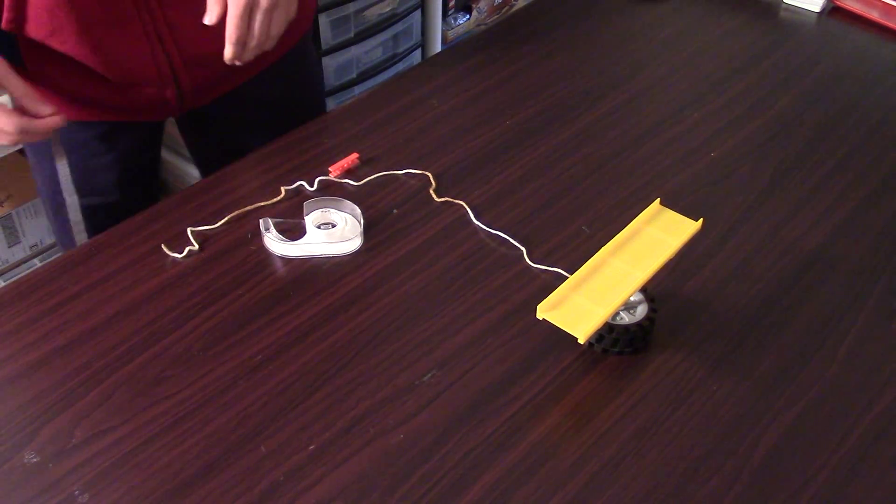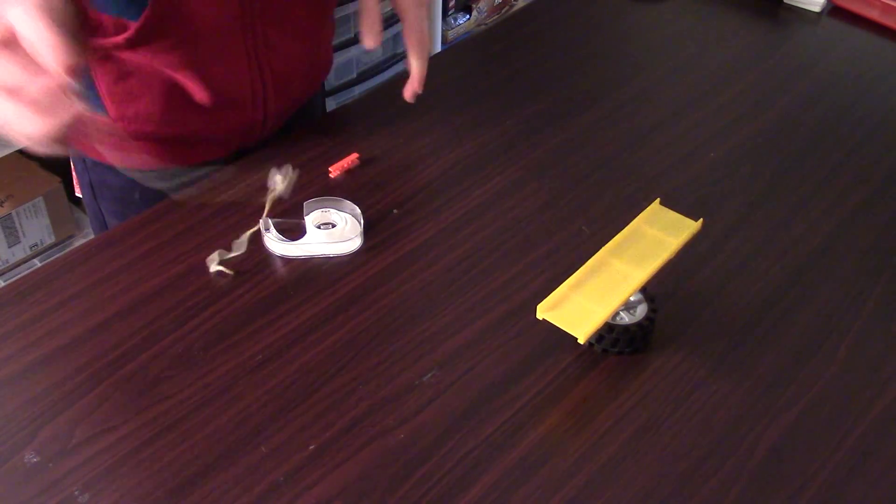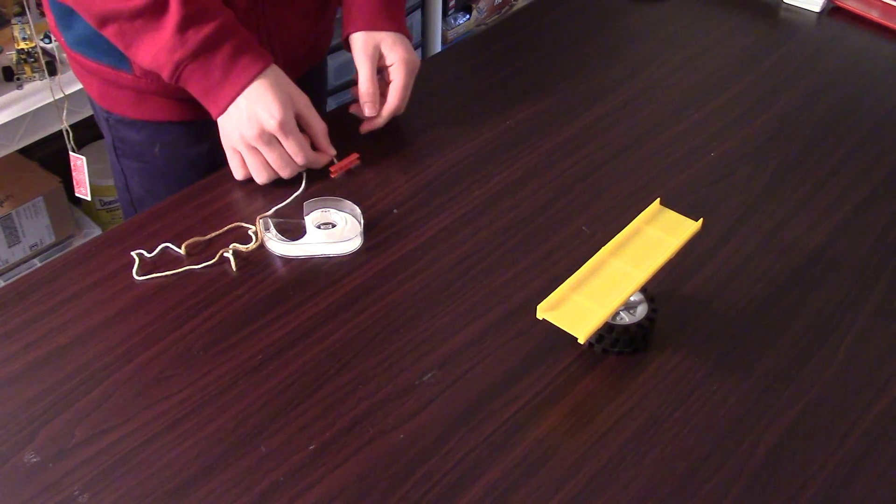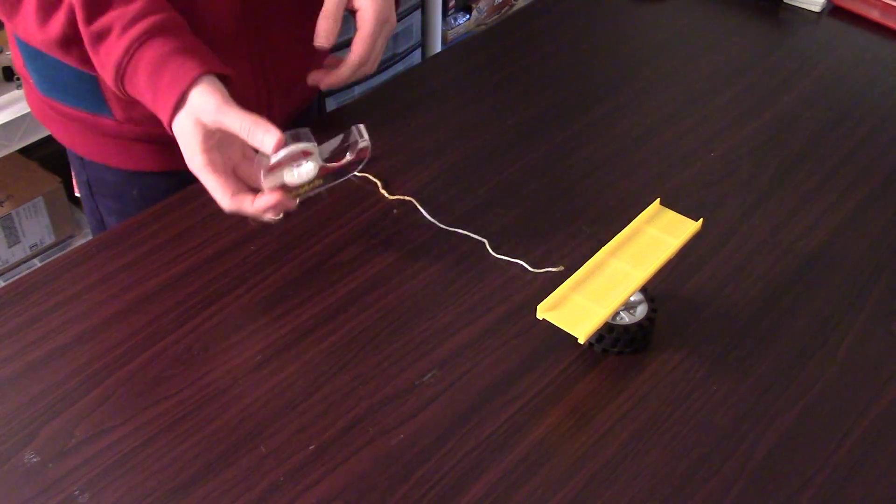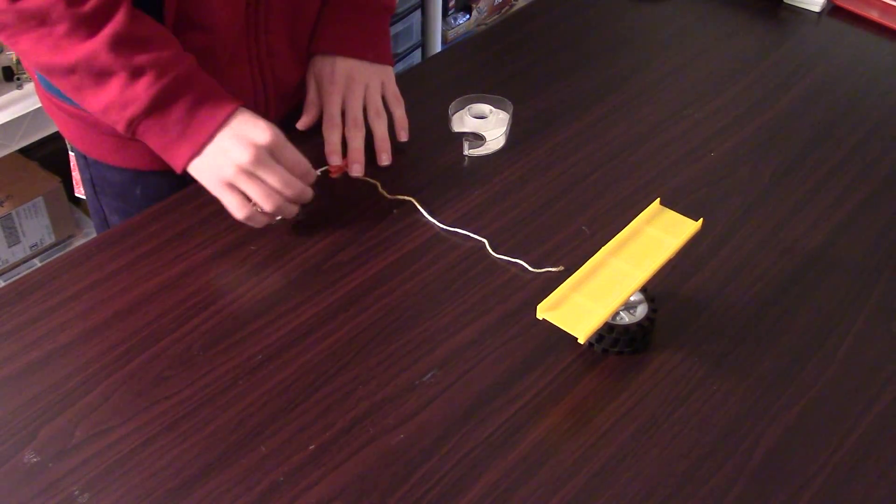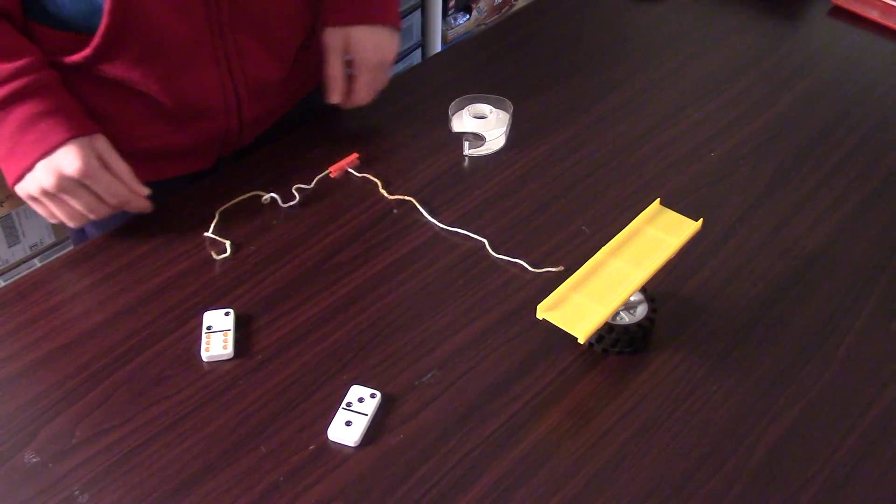So, now we've got our string here. And what we're going to do is thread it through the hole in the Knex piece. And attach one end to the tire, and one end to the two dominoes.